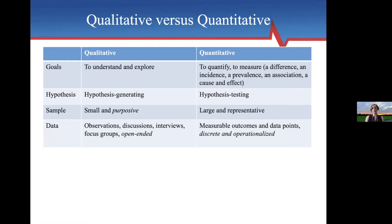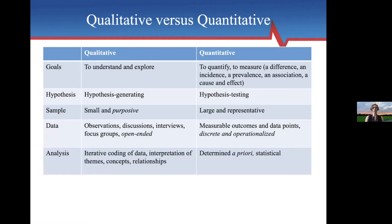What does your data look like? For quantitative studies we have measurable outcomes and data points — we operationalize what we're collecting. Whereas the data for qualitative is often observations, discussions, interviews, focus groups — open-ended data. It's almost like your data is a conversation. For analysis, quantitative is determined a priori and is a statistical analysis. But for qualitative, your analysis is ongoing when you start these conversations. You do iterative coding, which means you do it again and again. You look back at person number one after you've read the transcript for person number twenty, because you might get something more out of person one now that you've heard what person twenty had to say.